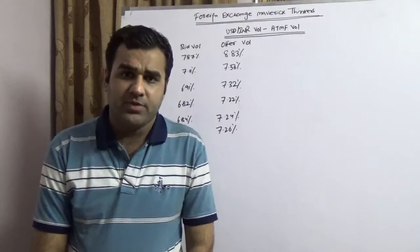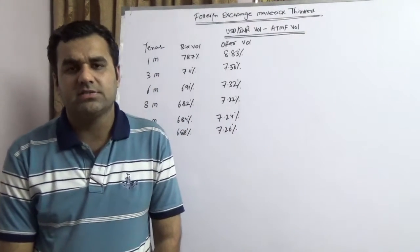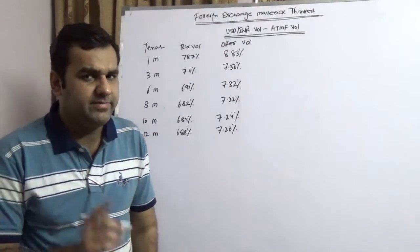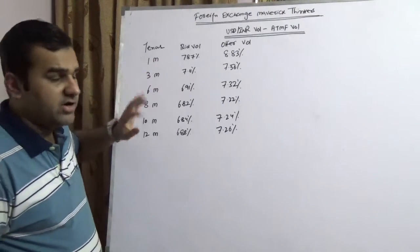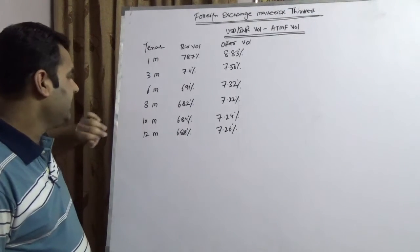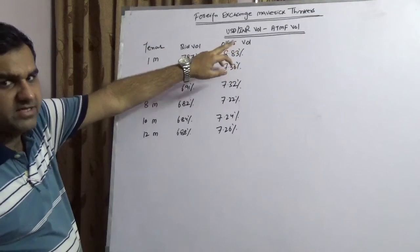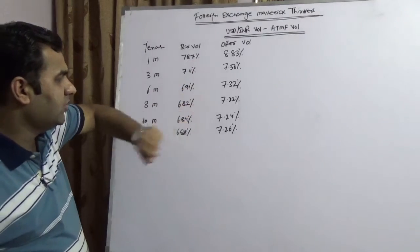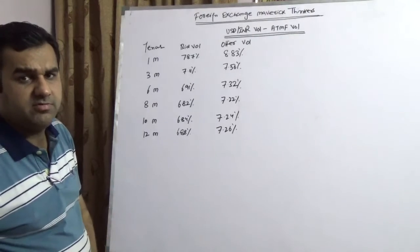Volatility is shortly known as vault. In this video I'm going to tell you about what you mean by option moneyness and how you can have vault in your favor. Let me explain this. This is USD INR vault. I had taken one month, three months, six months, eight months, ten months and twelve months period. These are at the money vault and at the money forward vault.